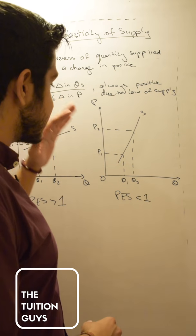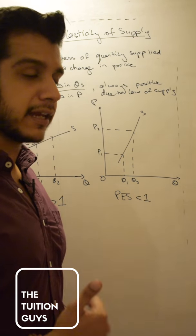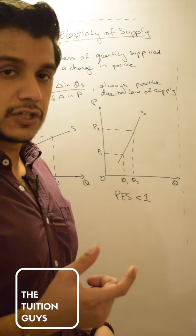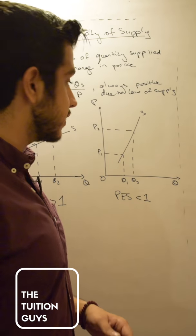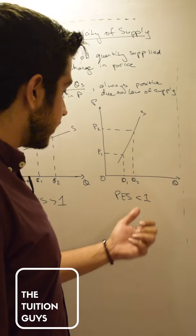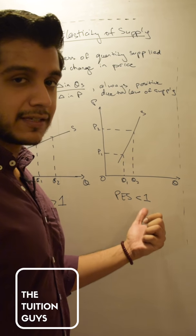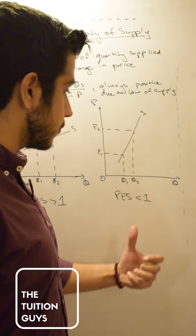It doesn't have to be massive, but can be a smaller rate. The proportionate change in the quantity supplied won't be very much, and that's going to be a relatively steeper curve. Again, it's still upward sloping, but that PES, price elasticity of supply, will be less than one. Take a screenshot of this.